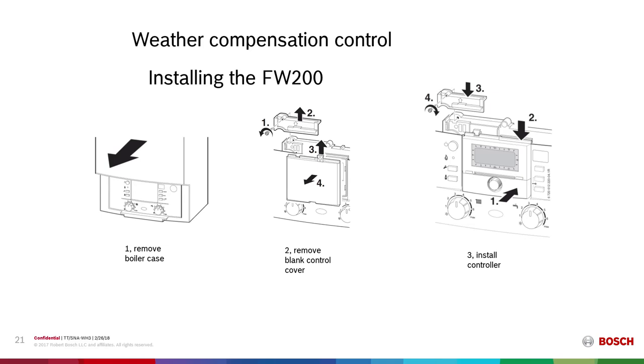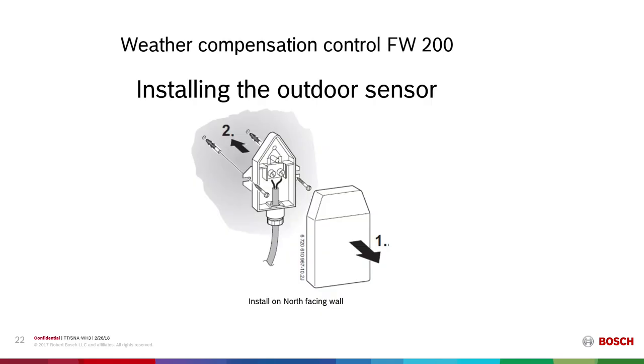An additional contact or connection point will be the outdoor sensor. The outdoor sensor is provided with the FW200. This NTC thermistor monitors outdoor temperatures, provides that information to the boiler so that the boiler can modulate proportionally according to the outdoor temperatures. The outdoor reset controller should be on a north-facing wall away from any influence to the temperature that it would sense, an influence like an exhaust or anything like that.